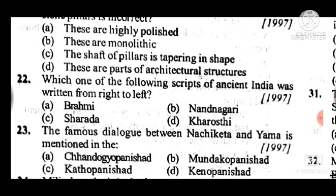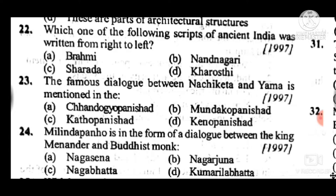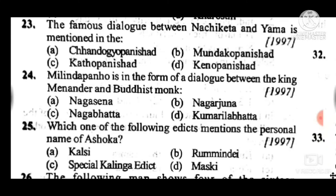Question 24: Milindapanho is in the form of a dialogue between King Menander and Buddhist monk — the answer is A, Nagasena. Question 25: Which one of the following edicts mentions the personal name of Ashoka? The answer is D, Maski.